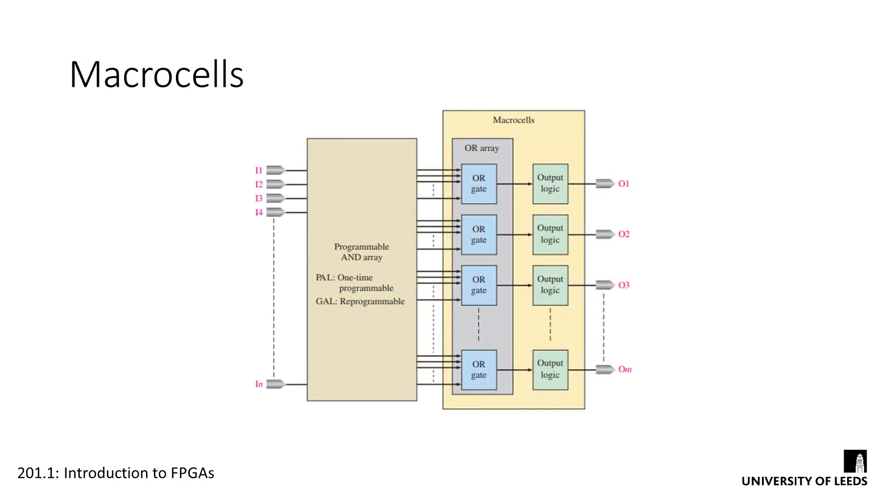In both types of SPLD, the output from the AND arrays will be passed to fixed OR gates. These OR gates are in turn connected to some additional output logic. This extra logic contains multiplexers, buffers, or registers depending on the complexity of the device. An OR gate combined with its associated output logic is called a macro cell. In complex logic devices and FPGAs, macro cells can themselves be reprogrammed to function as desired.